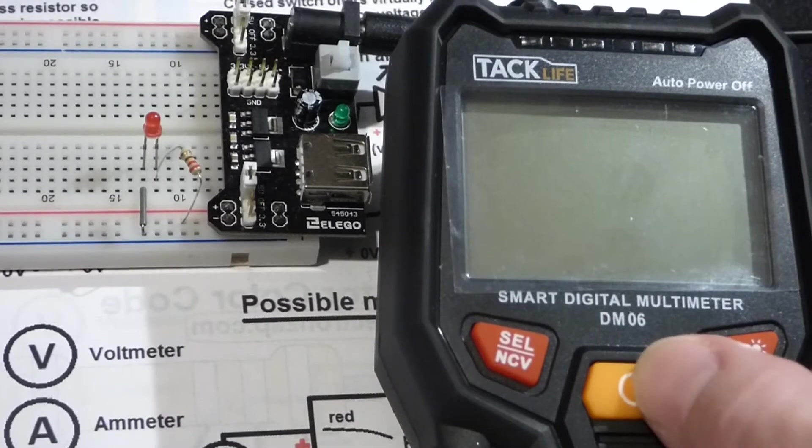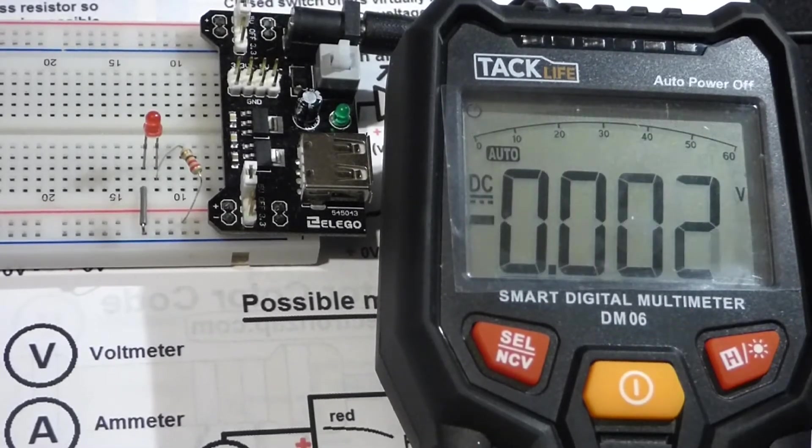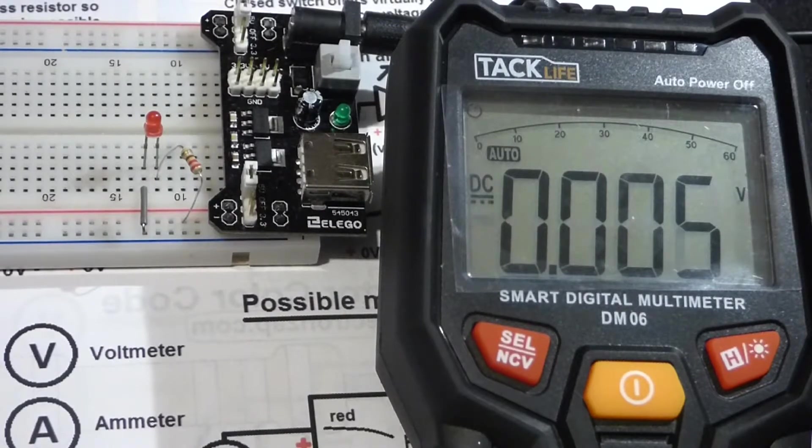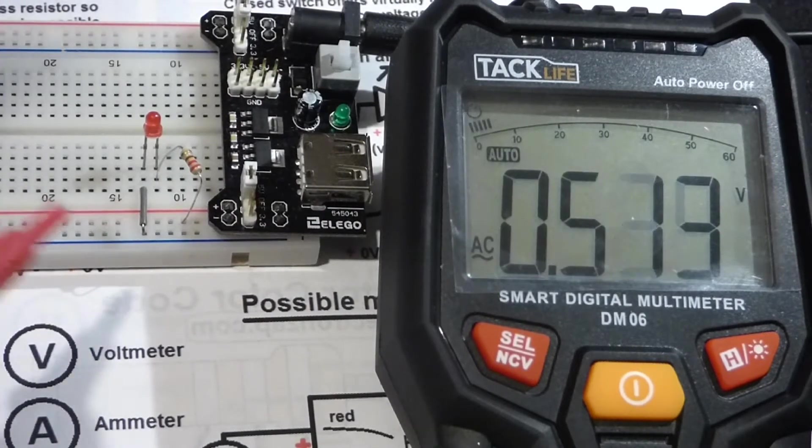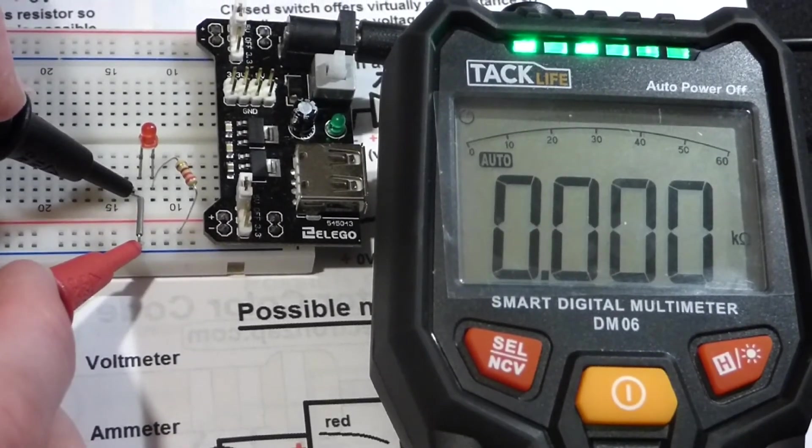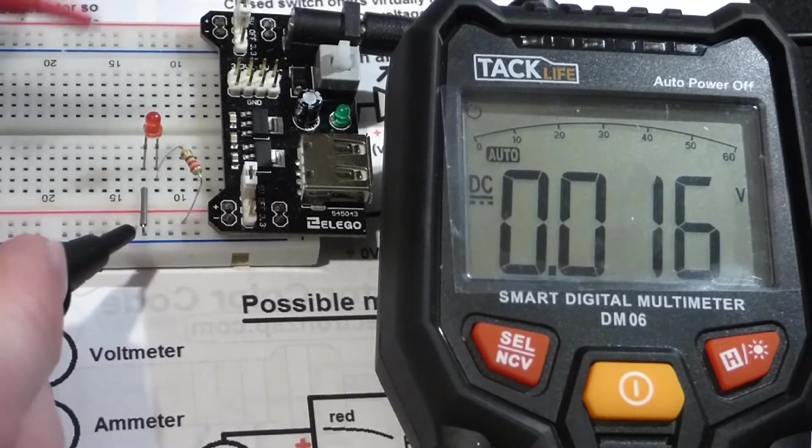To begin with, we're going to turn the meter on. Now it's going to auto-range, so you may see it flipping around a little bit. We're going to put the probes on both sides of this wire here. It doesn't matter which probe goes on which side right now.